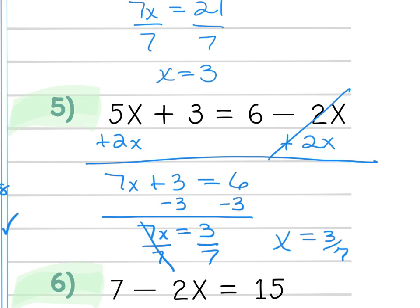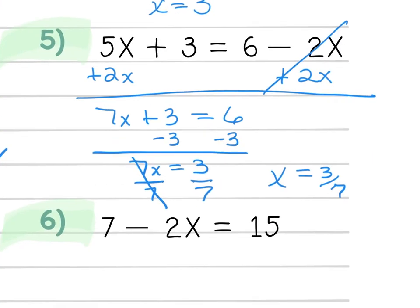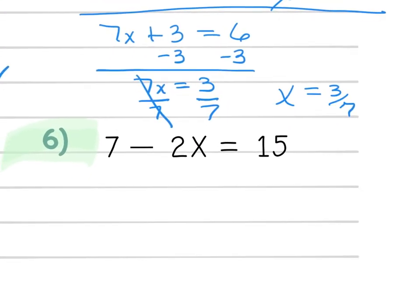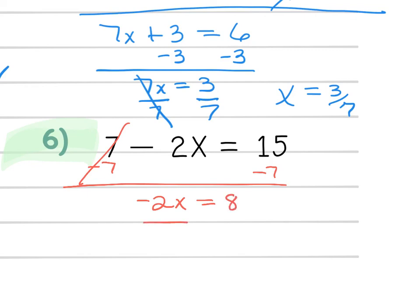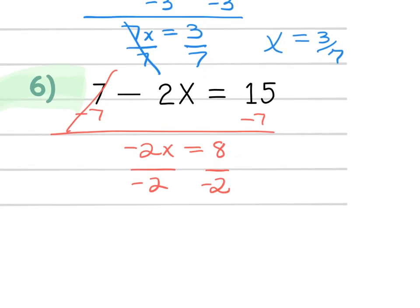Let's try number 7. My goal is to get x by itself, so I need to move the 7 first. It's gone from the left, the -2x drops down, and 15 - 7 = 8. Now I divide by -2, and x = -4.